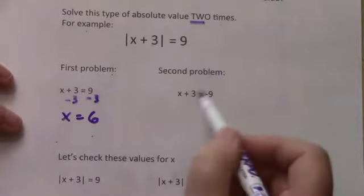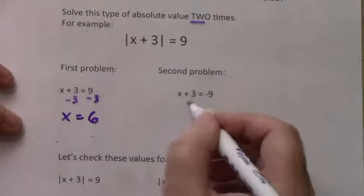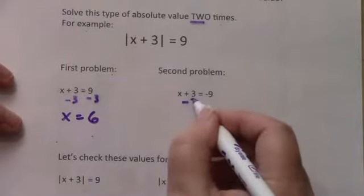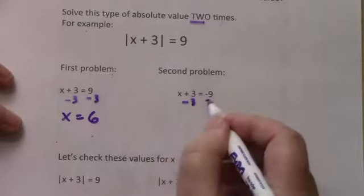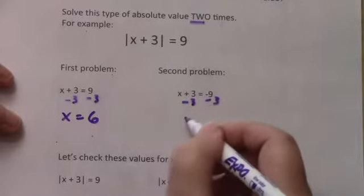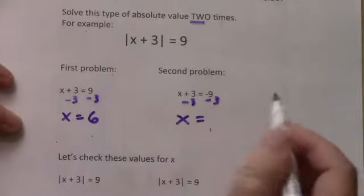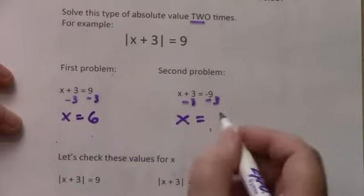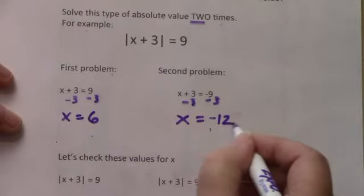For the second problem, we also remove the absolute value lines, but we make it equal to negative 9: x plus 3 equals negative 9. We subtract 3 from both sides, so x equals negative 9 minus 3, which is negative 12.